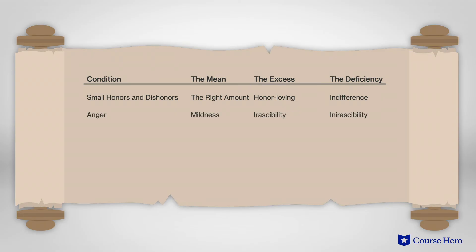In anger, the mean is mildness, the excess is irascibility, and the deficiency is inirascibility.